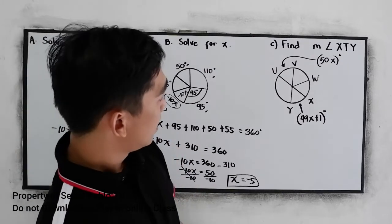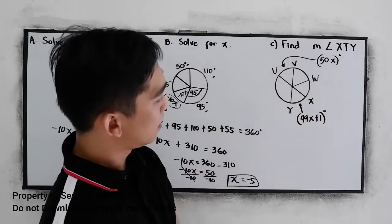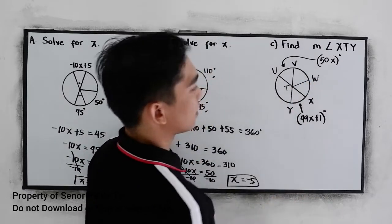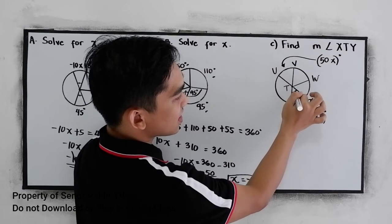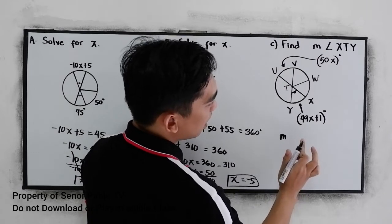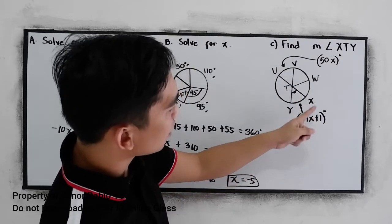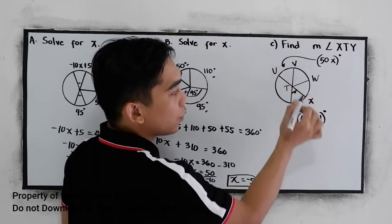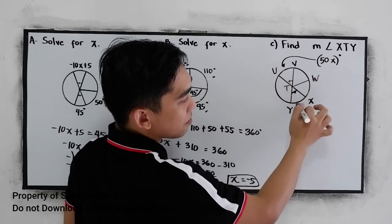For letter C, find the measure of angle XTY. Before we can get the value of angle XTY, let us first find the value for X. We know that the central angle is equal to its minor arc. So 50X is equal to 49X plus 1.